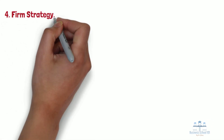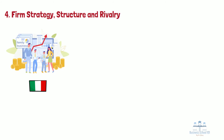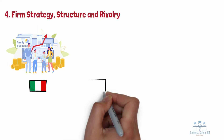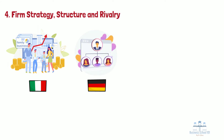Number four: firm strategy, structure, and rivalry. National circumstances and contexts create strong tendencies in how companies are created, organized, and managed. For example, in Italy, successful international competitors are often small or mid-sized companies that are privately owned and operated like extended families. In contrast, in Germany, companies tend to be strictly hierarchical in organization and management practices, and top managers usually have technical backgrounds. No one managerial system is universally appropriate. Competitiveness in a specific industry results from convergence of the management practices and organizational modes favored in the country and the sources of competitive advantage in the industry.